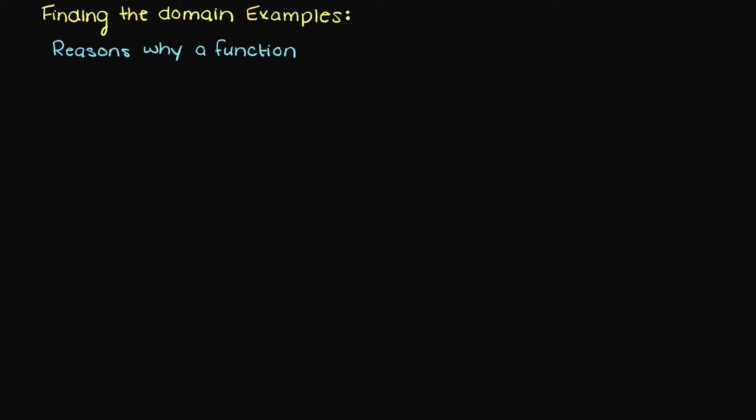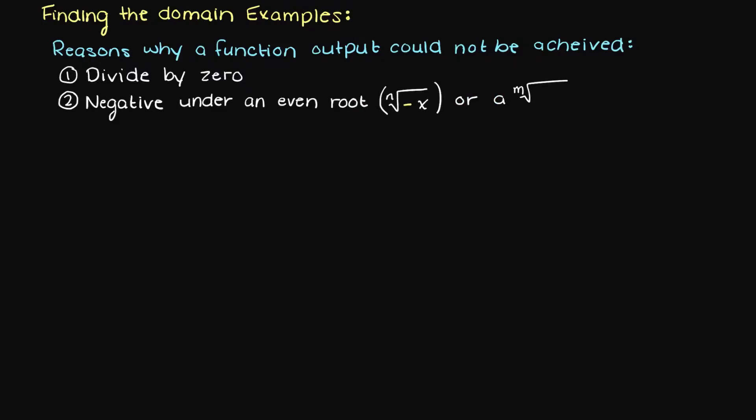Let's first list the two reasons we found in the previous video of why a function output may become undefined. Firstly, if we have a divide by zero for a given input, the output of the function is undefined at that point. Secondly, if we have a negative under an even root in either the numerator or denominator, or a zero under an odd root in the denominator, then the output of the function is also undefined for that input.